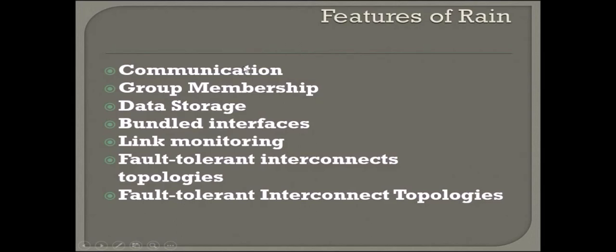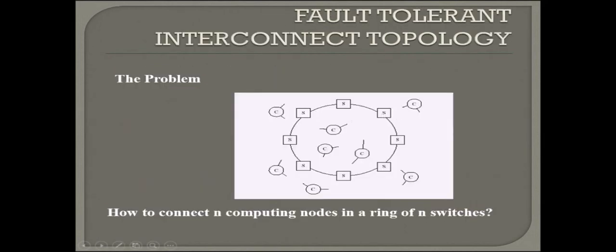There are some features of RAIN which you will see in detail in later slides. It has to have communication, group membership, data storage, bundle interfaces, link monitoring, and fault-tolerant interconnect topologies. These are similar but there may be differences in the components or configuration.